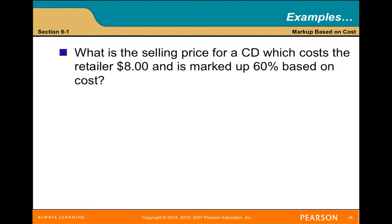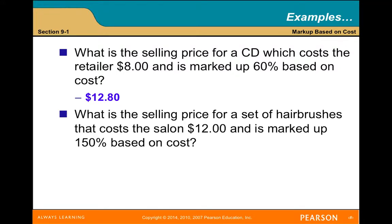What is the selling price of a CD which costs the retailer $8 and is marked up 60% based on cost? $12.80. What is the selling price for a set of hairbrushes that costs the salon $12 and is marked up 150% based on cost? Remember, if the cost is $12, adding another $12 is a 100% markup, and half of $12 is $6. So 100 plus 50 gives us 150%, meaning the selling price is $30.